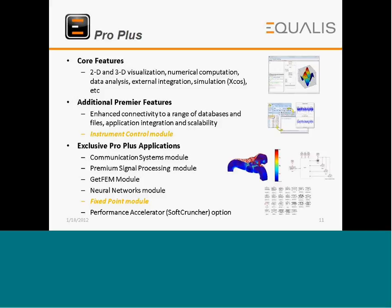The Pro Plus package core features include 2D and 3D visualization, numerical computation, data analysis, external integration, and simulation via XCOS. Additional premier features include enhanced connectivity to databases and files, application integration and scalability, and an instrument control module. Exclusive Pro Plus applications include a communication systems module, premium signal processing module, GetFEM module, neural networks module, fixed point module, and a performance accelerator known as the soft cruncher option.